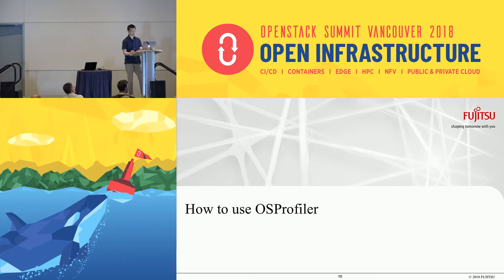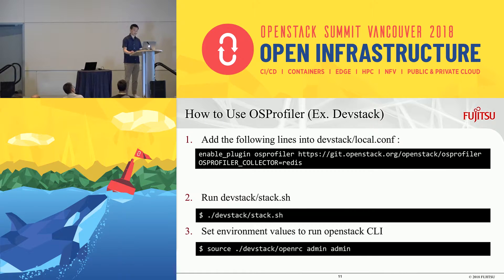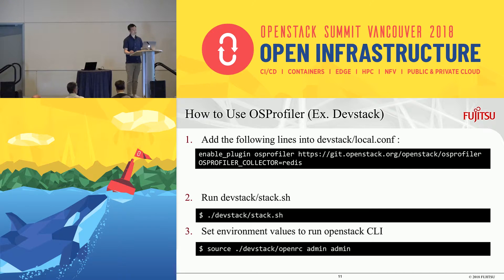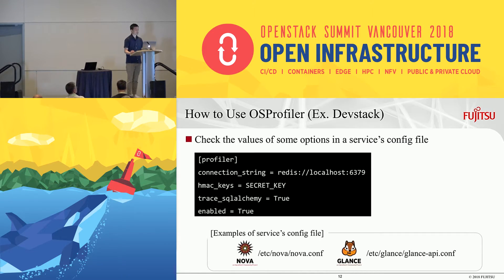Now I'll explain how you can use OS Profiler, but today only basic stuff. Let's build an environment using DevStack to use OS Profiler. If you are an operator who already has a production environment that enables OS Profiler, then you can skip this part. First of all, add the following two lines to DevStack's local.conf and then run DevStack. You also need to set environment values to run OpenStack CLI, and then check the value of some pre-configured options in one service config file — either Nova, Glance, Neutron, or whatever you like.